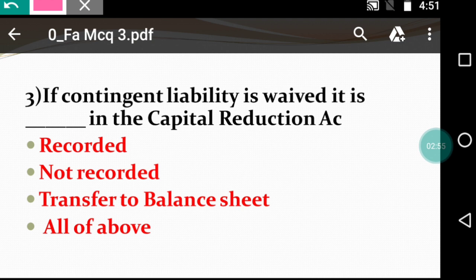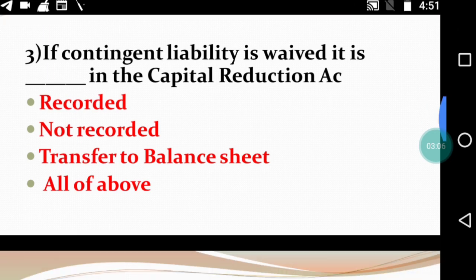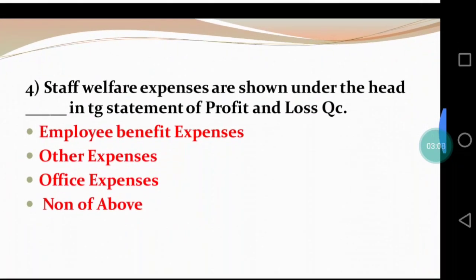In that case, there is no entry to record. So the right answer is: not recorded. The contingent liability that is waived is simply not recorded in the capital reduction account.